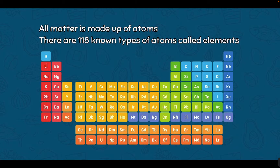We do have to start with the basics of chemistry. All matter — anything that has mass and takes up space — is made up of atoms. When you have a type of atom it is called an element, and there are 118 known types of atoms. This is the periodic table of elements showing the 118 types of atoms that make up our planet and knowable universe.